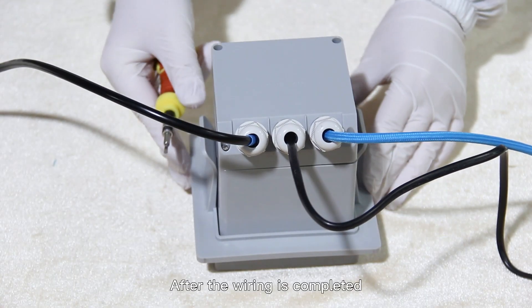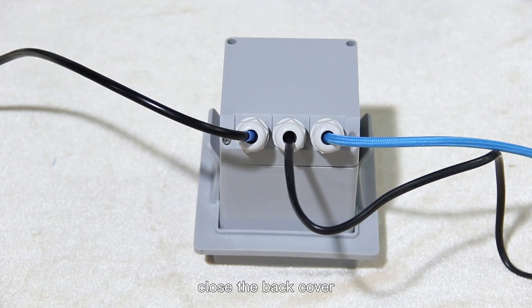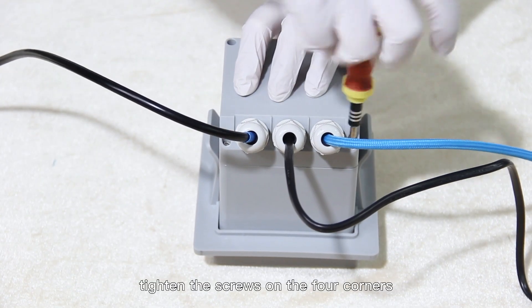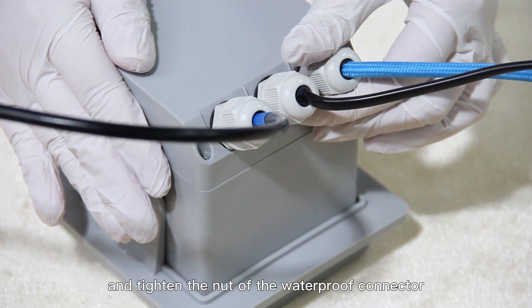After the wiring is completed, close the back cover. Tighten the screws on the four corners and tighten the nut of the waterproof connector.